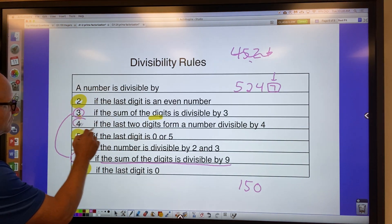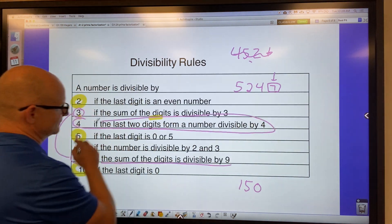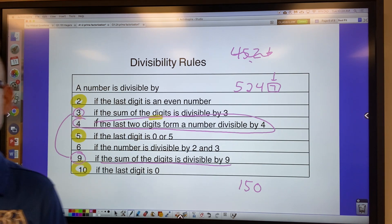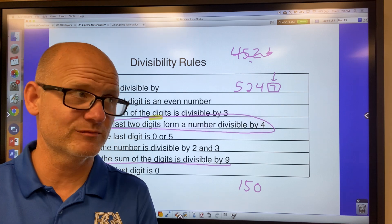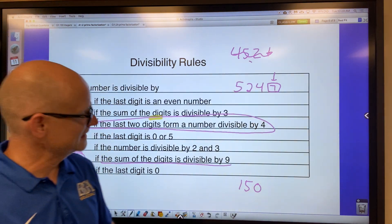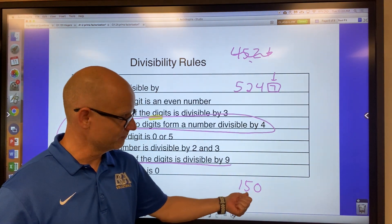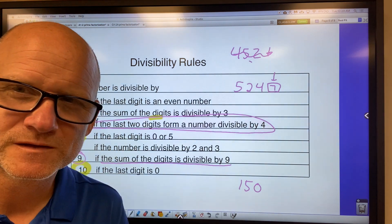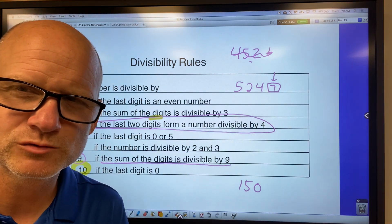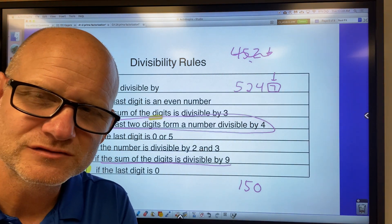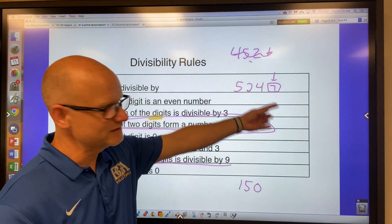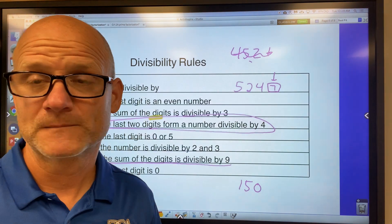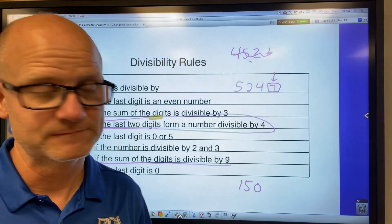And then 4 is kind of the most confusing one. You're just looking at the last two digits of any number. And if the last two digits is divisible by 4, then the number is divisible by 4. So for example, this number is not divisible by 4 because the last two digits, 50. 50 is not divisible by 4 because 12 times 4 is 48. 13 times 4 is 52. That number, 47, that's not divisible by 4. It's not because the last two digits. So anyway.